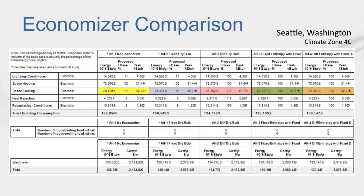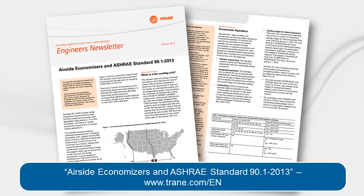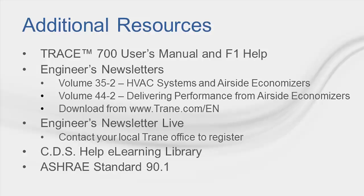If interested in more information on the New File Wizard feature, please see the video titled Using the New File Wizard in TRACE 700 in the eLearning Library section of our website. Last year, Trane published an engineer's newsletter on economizers discussing the relationship of airside economizers and Standard 90.1-2013 in much greater detail. For more information on the airside economizer feature or any other aspects of the program, please refer to the user's manual — a fully indexed PDF copy is available via the help menu. The context-sensitive F1 help will provide instant access to definitions and explanations of each field within the program, and our ever-growing list of eLearning videos is available via our website at www.traincds.com.